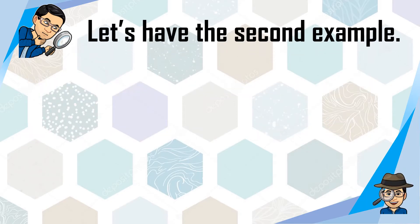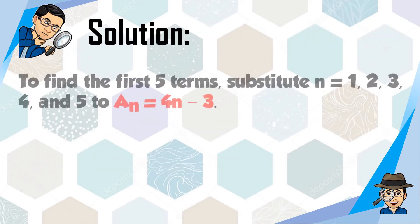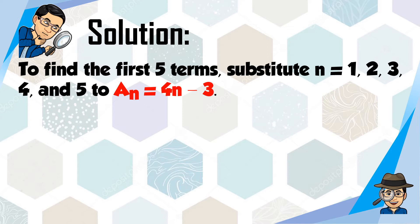Next example: Find the first 5 terms of the sequence whose n-th term is given by a sub n is equal to 4n minus 3. Previously we looked for 3 terms; now we need 5 terms. In order to find the first 5 terms, substitute n is equal to 1, 2, 3, 4, and 5 into a sub n equals 4n minus 3. Since we need 5 terms, we substitute 5 values.